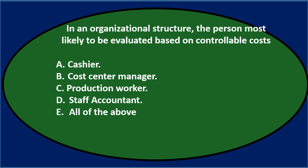In an organizational structure, the person most likely to be evaluated based on controllable costs. B says a cost center manager, and you would think that the manager would be a reasonable choice here — they would be the ones most accountable for controllable costs.